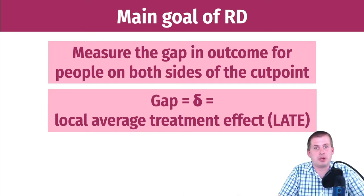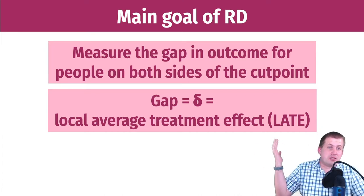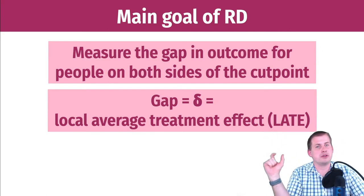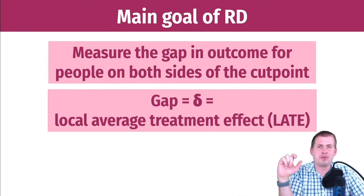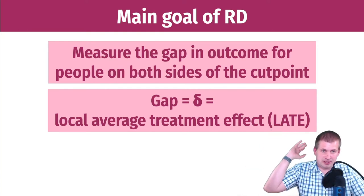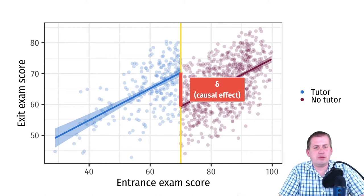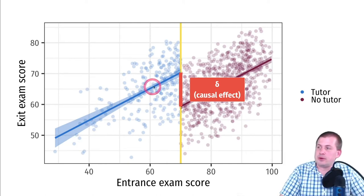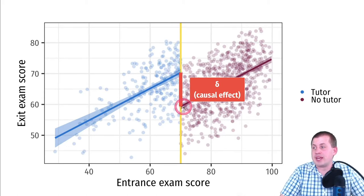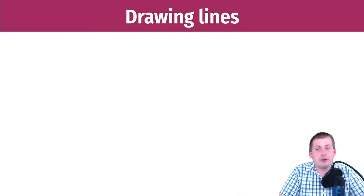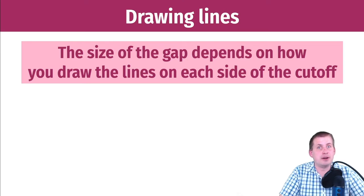In the world of regression discontinuity, this gap is what we call a local average treatment effect. We'll talk about why it's 'local' versus a regular average treatment effect in a bit. Graphically, you compare the average for treatment or control right before the cutoff, then compare the other group right after the cutoff, and measure that gap — that is your delta, the causal effect. But the size of that gap depends on how you draw the lines.